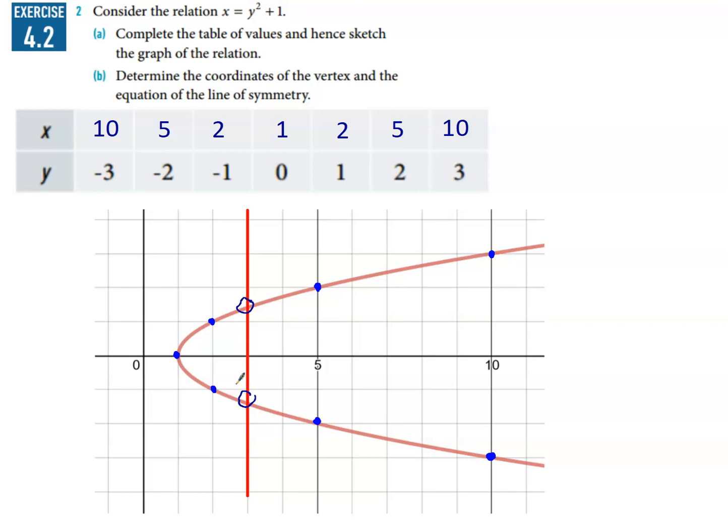Okay, determine the coordinates of the vertex. Well, there they are right there, so that's pretty easy. That is just x equals 1 and y equals 0. And the line of symmetry is obviously the x-axis, and the formula for that is y equals 0. Okay, moving on.